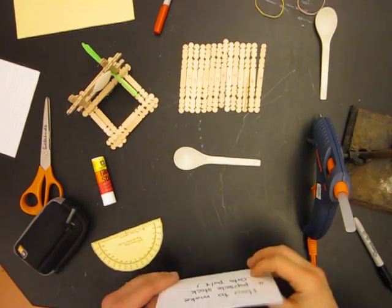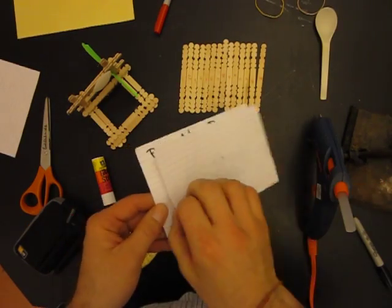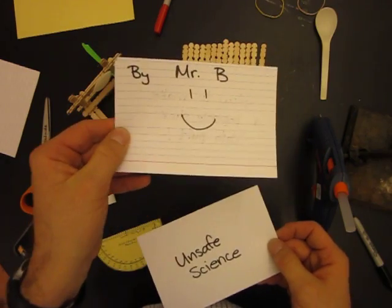Hi, this is Mr. B, and today I'm going to show you in this episode of Unsafe Science how to make a Popsicle stick catapult.